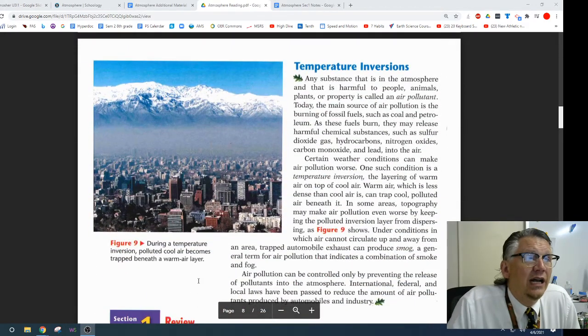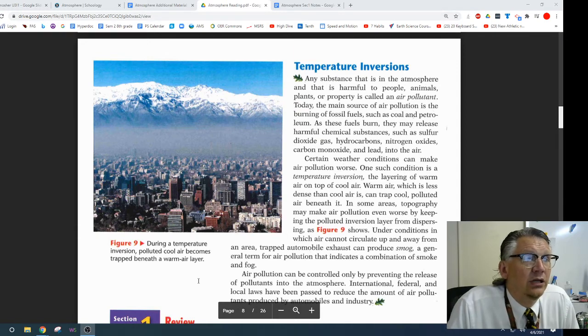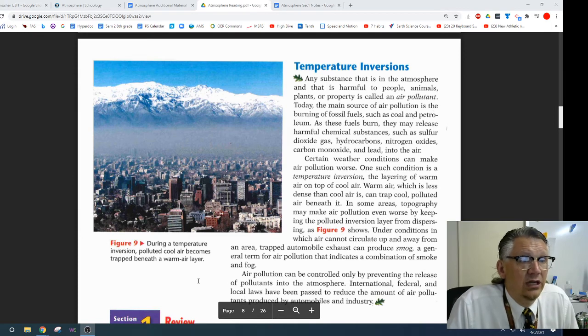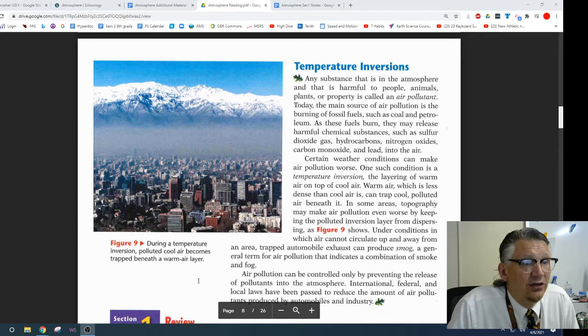Temperature inversions. Any substance that is in the atmosphere and is harmful to people, animals, plants, or property is called an air pollutant. Today, the main source of air pollutant is burning of fossil fuels, such as coal and petroleum. As these fuels burn, they may release harmful chemical substances, such as sulfur dioxide gas, hydrocarbons, nitrogen oxides, carbon monoxide, and lead into the air.